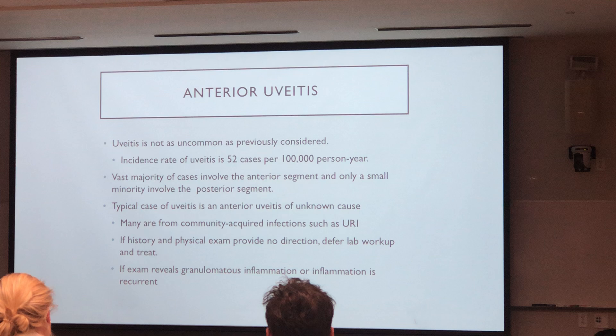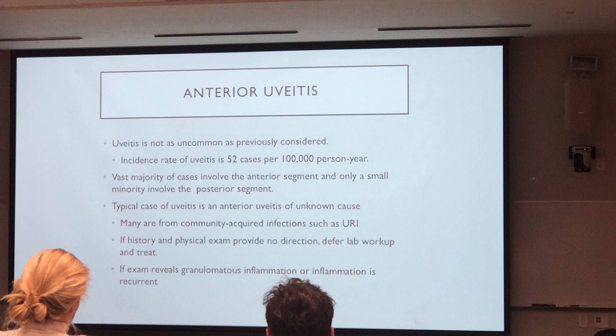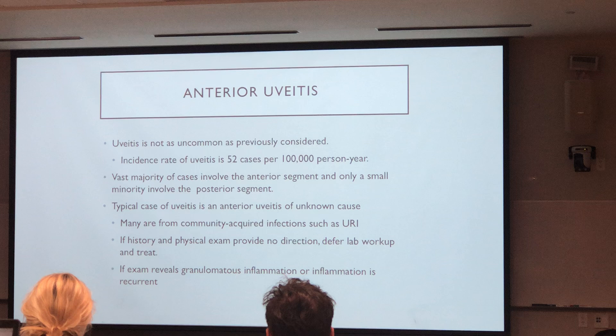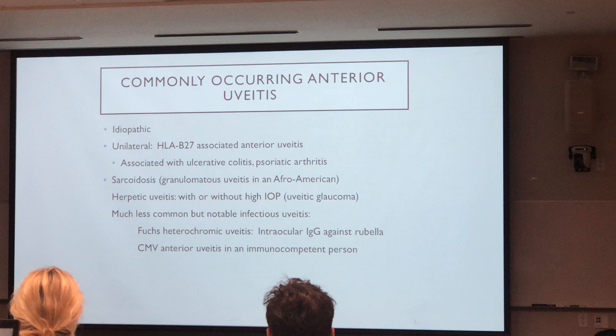Anterior uveitis is the most common form of uveitis you will see. In a community of 100,000 people, there are going to be 52 cases of anterior uveitis each year. The incidence of intermediate is much less, and posterior much less than that. The most common form of anterior uveitis is idiopathic, but HLA-B27 is also up there on the list, as well as sarcoid and herpes.